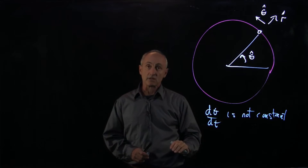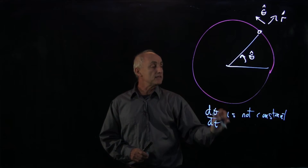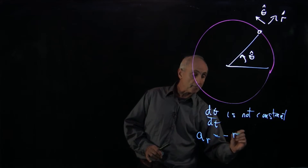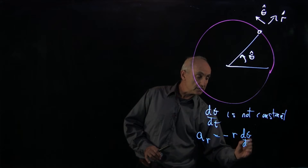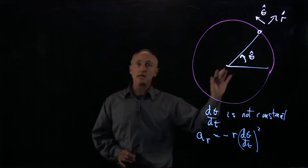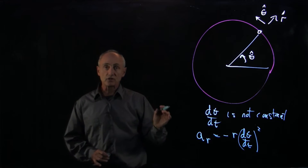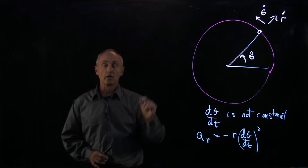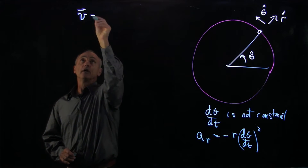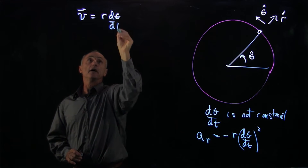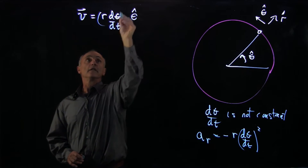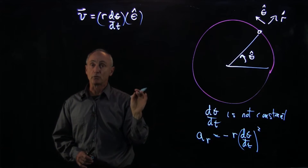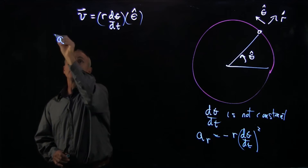That's one type of case. At any instant, we always know that there is a radial component given by minus r times d theta dt squared. But because it's speeding up and slowing down, there is now a non-zero tangential component to the acceleration. If we write our velocity vector as r d theta dt theta hat, this is the product of two terms.